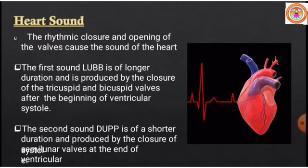The second sound, dub, is of shorter duration, and is produced by the closing of the semilunar valves at the end of ventricular systole. So at the beginning of ventricular systole the lub sound is produced, and at the end of ventricular systole the dub sound is produced. The rhythmic opening and closing of the valves produces the lub and dub sounds of the heart.